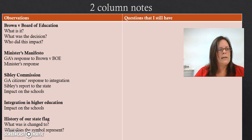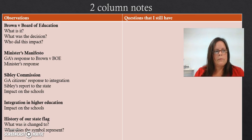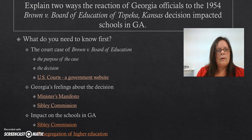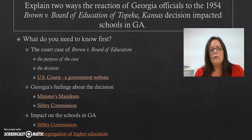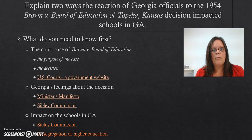and the history of our state flag. On the screen, you'll see suggestions of questions that you're going to want to answer as you read — these are the things you're going to look for in your observations. The first thing you'll want to do to explain the relationship between these two events is to explain two ways that the reaction of Georgia officials to the 1954 Brown v. the Board of Education decision impacted schools in Georgia.